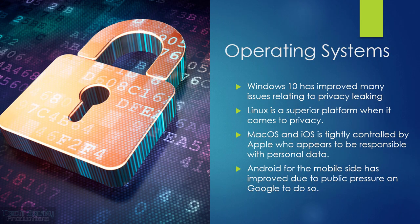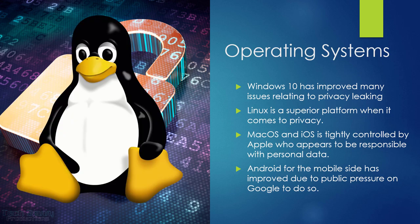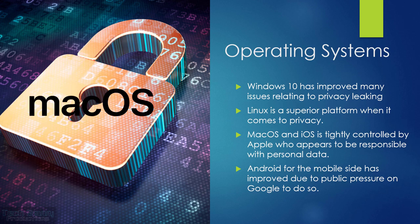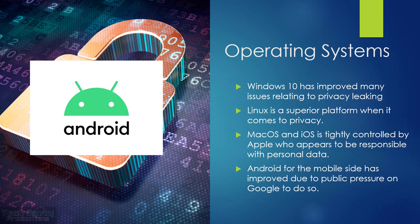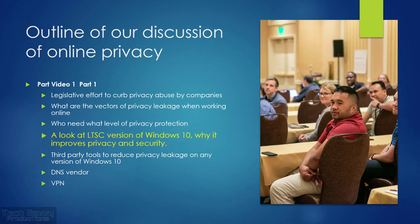Back to operating systems. Windows 10 has improved many issues relating to privacy leakage, though many feel they haven't done enough. Linux is a superior platform for privacy, with very little known privacy or data leakage. Mac OS and iOS are tightly controlled by Apple, who appears more responsible with personal data, although not perfect. Android on the mobile side has improved due to public pressure on Google. Let's take a look at the LTSC version of Windows 10 and its potential for improving privacy and security.